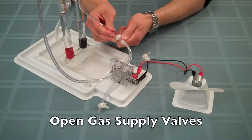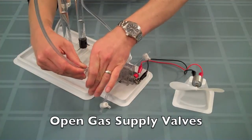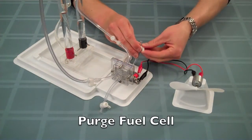Open the valves on the gas supply tubes to the fuel cell. Then give the purge valves a quick half turn.